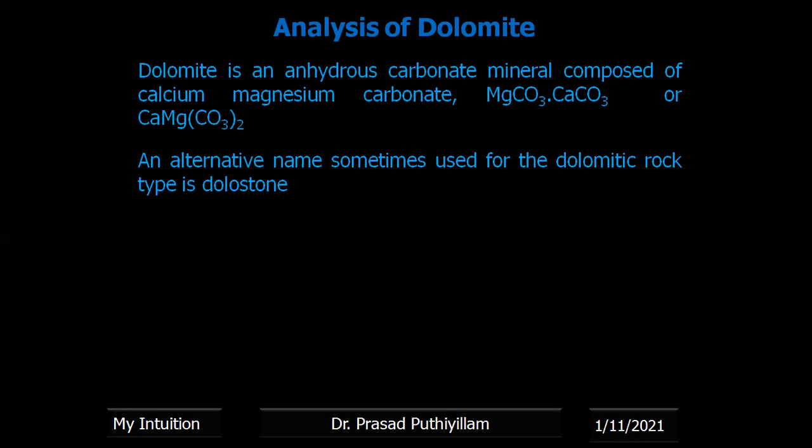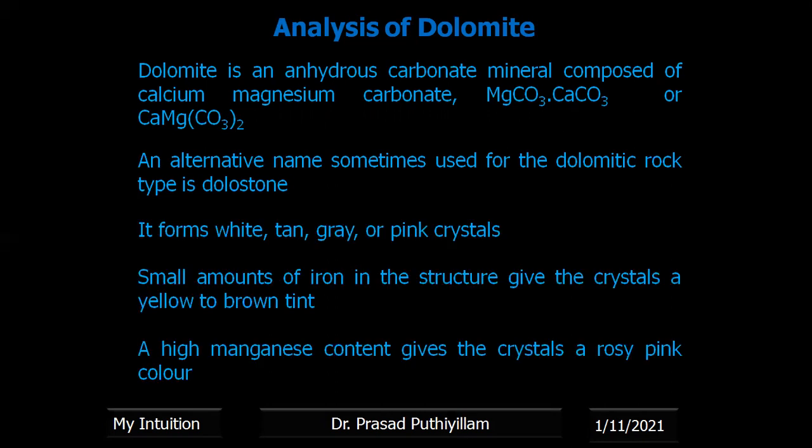The alternate name sometimes used for the dolomite rock type is dollar stone. It forms white, tan, gray, or pink crystals based on the composition. A small amount of iron in the structure gives the crystal a yellow to brown tint, and high manganese content gives the crystal a rosy pink color.